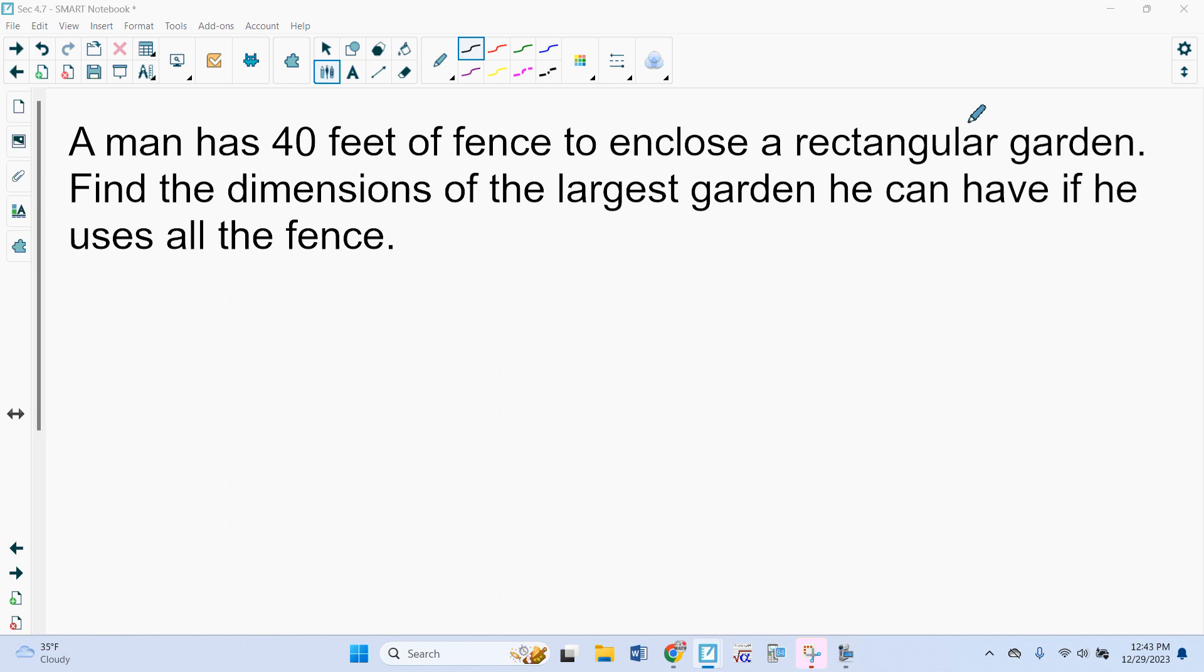So let's say we have this example. A man has 40 feet of fence to enclose a rectangular garden. Find the dimensions of the largest garden he can have using all of the fence. So first, if we draw our picture, rectangular garden, if I say this side is x, then that tells me that the length and width have to be 20 since we have 40. So I know these two sides have to add up to 20. So this side is 20 minus x.